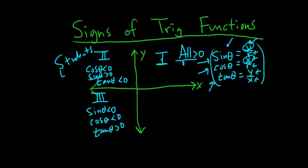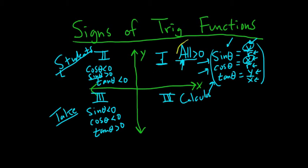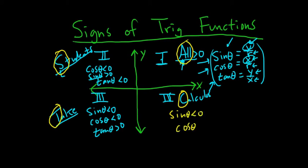So: All Students Take Calculus. All trig functions are positive in quadrant 1. Only sine is positive in quadrant 2. Only tangent is positive in quadrant 3. And only cosine is positive in quadrant 4 — where sine theta is negative, cosine theta is positive, and tangent is negative.